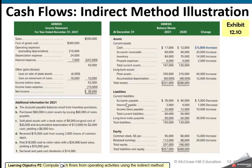Here we have the income statement and the additional information they give us, and then the balance sheet showing the current year and the prior year, with the increase or decrease between those years calculated.